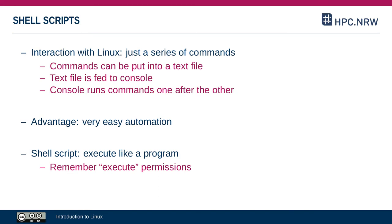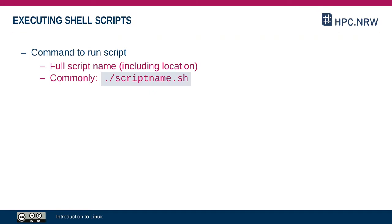We've talked about execute permissions before — that's where those come into play. If you want a shell script to be able to be executed, you have to set the execute permissions for it. You basically need the script name, but you also need the path to the script name. It can be a relative path if the script is in the folder you're currently in, or it can also be an absolute path. Remember that execute permissions and read permissions are separate, so you can execute something that you might not necessarily be able to see because the read permission isn't set.